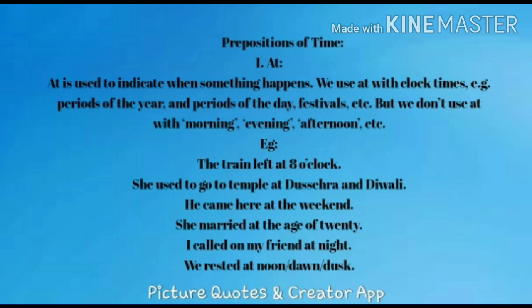The first one is 'at.' 'At' is used to indicate when something happens. We use 'at' with clock times, periods of the year, and periods of the day, or festivals. But we don't use 'at' with morning, evening, or afternoon — we use 'at' with night. For example: 'The train left at 8 o'clock.' Here a particular point of time in a day is mentioned, so we use 'at' before the time.